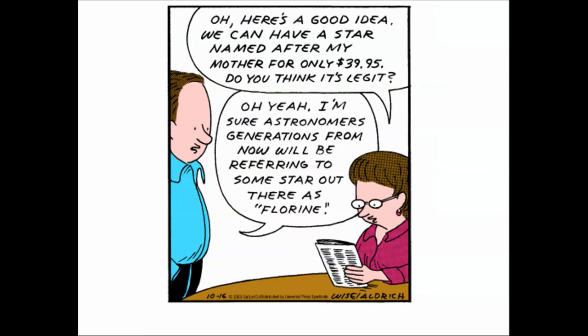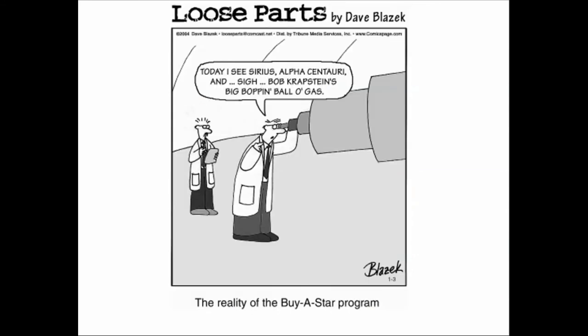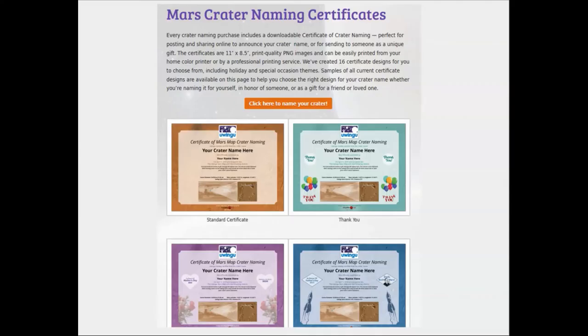Bearing that in mind, let's think about this. Well, here's a good idea. We can have a star named after my mother for only $39.95. Do you think it's legit? Oh, yeah. I'm sure astronomers' generations will now be referring to some star out there as Florine. Similarly, today I see Sirius, Alpha Centauri, and Bob Kraftstein's Big Bop and Ball of Gas. The reality of the Buy a Star program. Perhaps you've heard of these Buy a Star programs. And the question, of course, is it legit? And the answer is... Yes. And no. It's whether we're thinking in terms of asterisms, constellations, IAU.